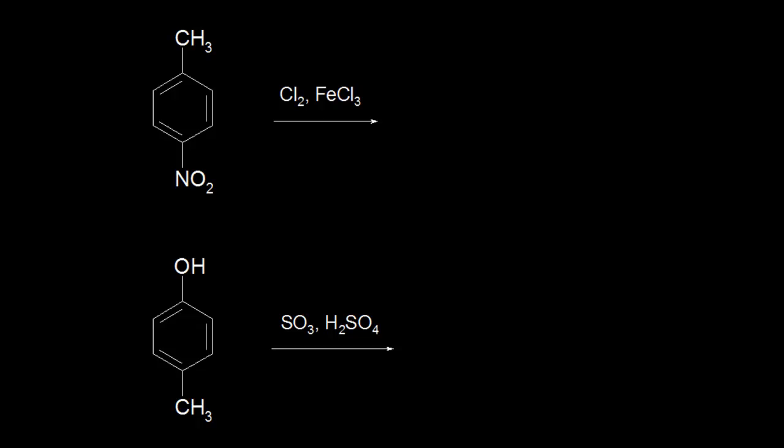Now that we understand ortho, para, and meta directors, let's see what happens when you have multiple substituents on a benzene ring. If I look at this first reaction, I can tell that this is a halogenation reaction, and it's going to put a chlorine onto the ring. The question is, where will the chlorine go? To figure that out, you have to look at your substituents and see what kind of directors they are.